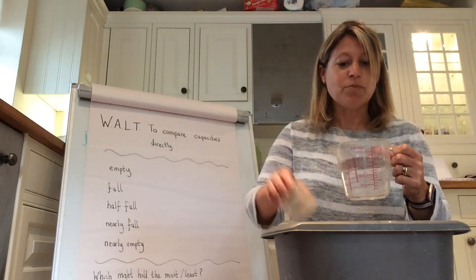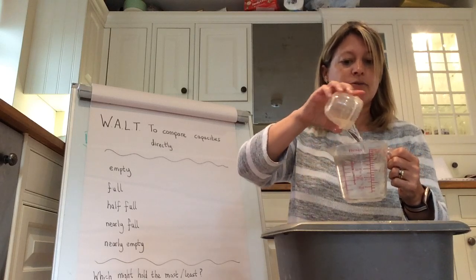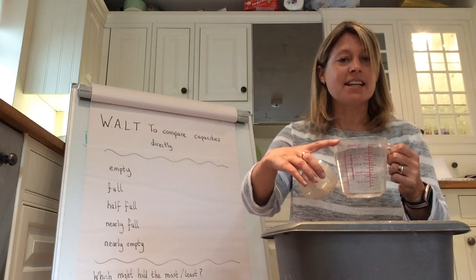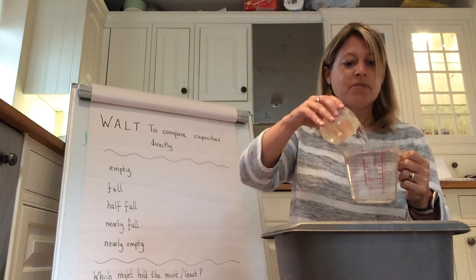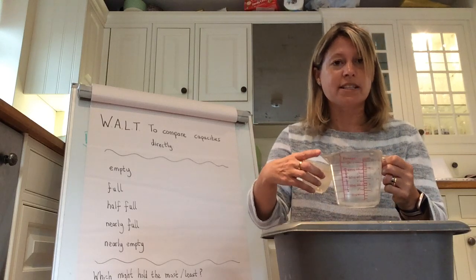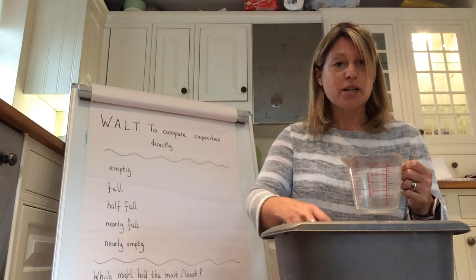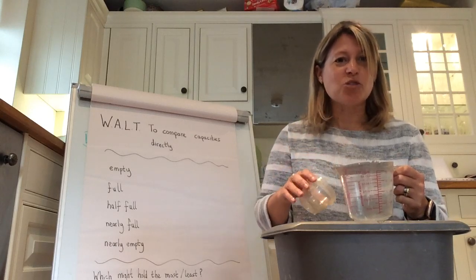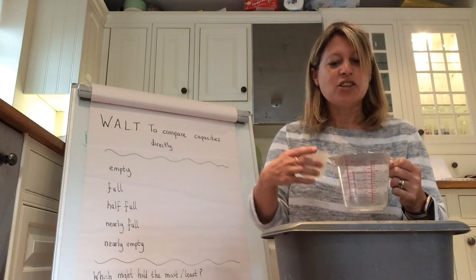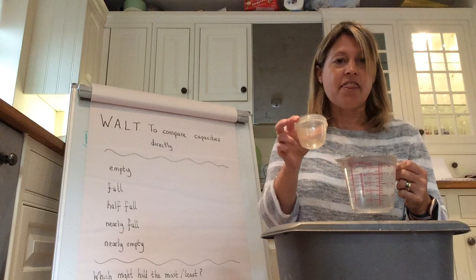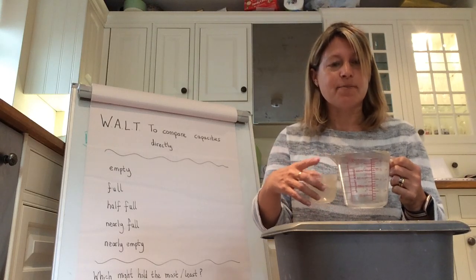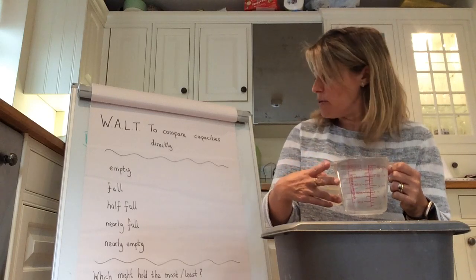I'm going to pour it in again — look how many times we're managing to do this — three, four, and now it's nearly full. It's not quite at the top but it's nearly there. And five — it is completely full. The water's right at the top of the jug. If I try to put another one in it will start to overflow, so it really was at its fullest capacity. This jug holds a lot more water than this little plastic pot, so it's got a greater capacity — it can hold the most water.